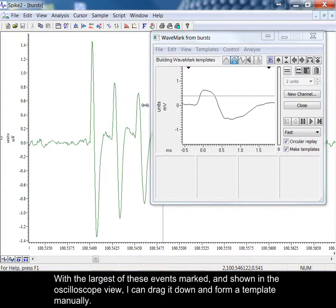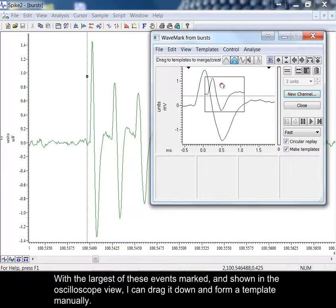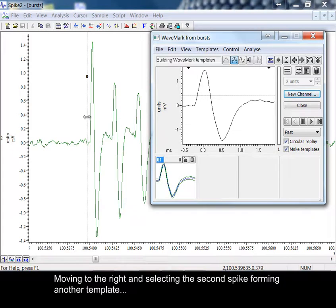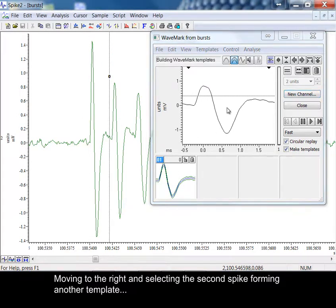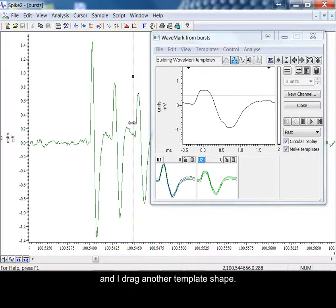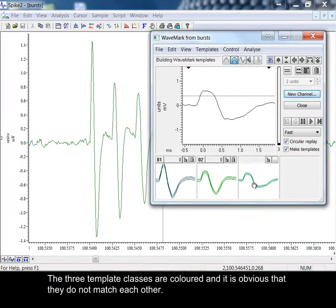With the largest of these events marked and shown in the oscilloscope view, I can drag it down to form a template manually. Moving to the right and selecting the second spike forming another template. To the last event, I drag another template shape. The three template classes are colored and it is obvious that they do not match each other.